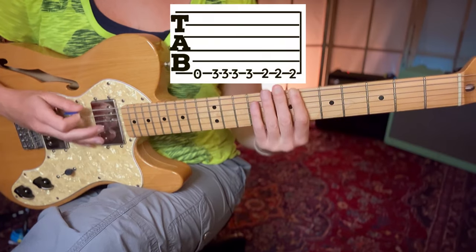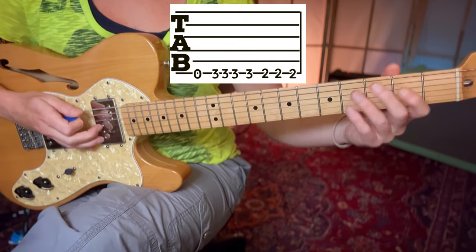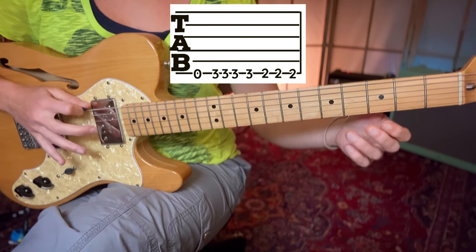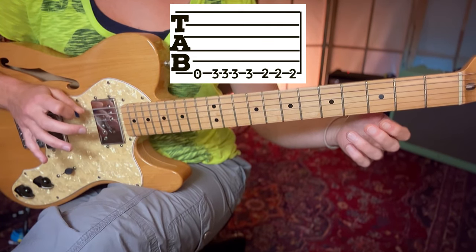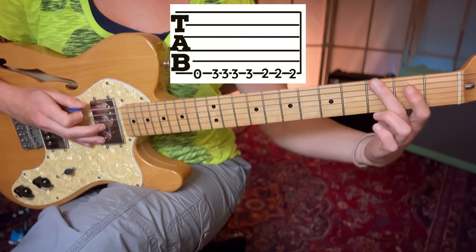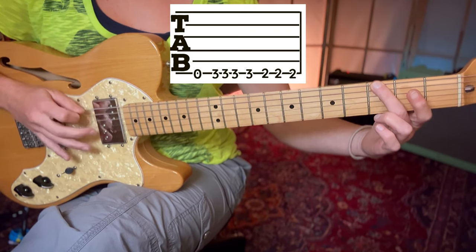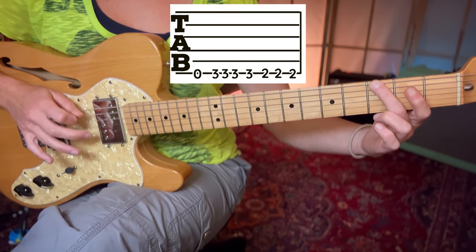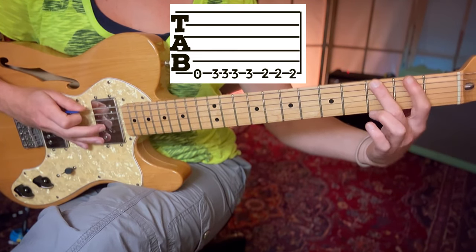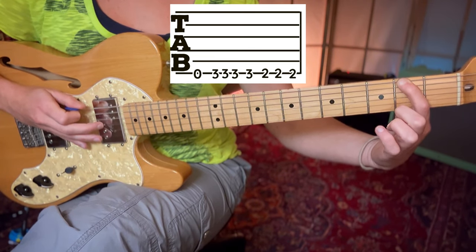This is the same rhythm with the picking hand but the fret numbers change. So we do an open E string once down again. We take our middle finger to the third fret and here we do down up down down. And then we go to the second fret with the index finger and do three down strums.